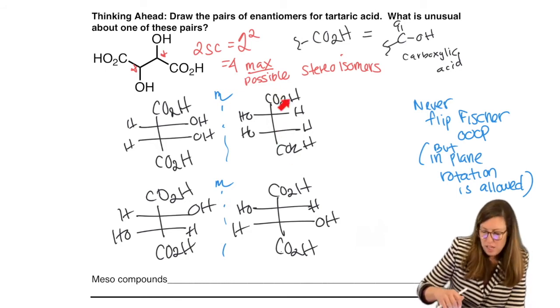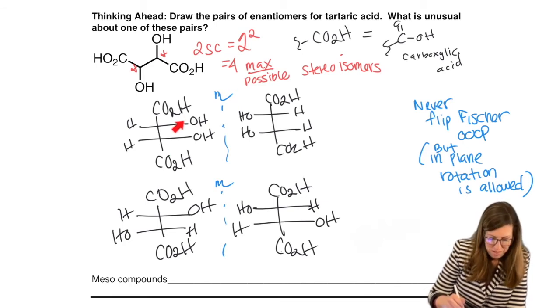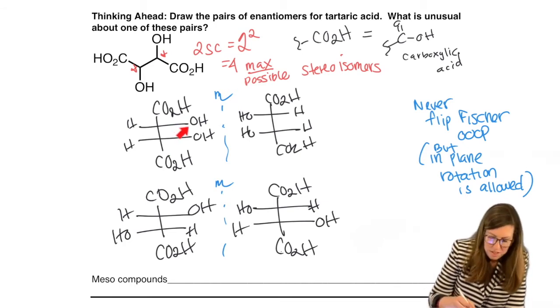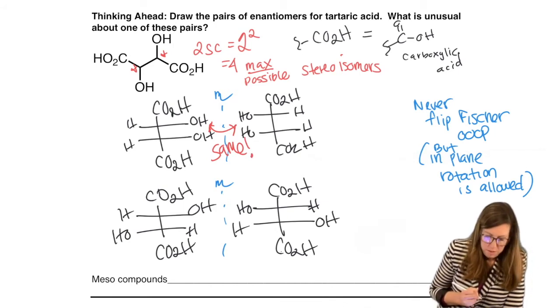They're never allowed to be flipped. So never flip a Fischer out of plane. You could do in plane rotation. So never flip Fischer out of plane. In plane rotation is allowed. Why are we doing that? Because look what happens if you do an in plane rotation here. Twist this like a doorknob in the plane. The head and the tail are the same, so you line up the head and the tail here to match. This is the same as that. They're not different. They're not enantiomers.